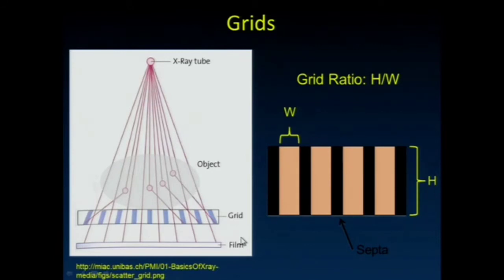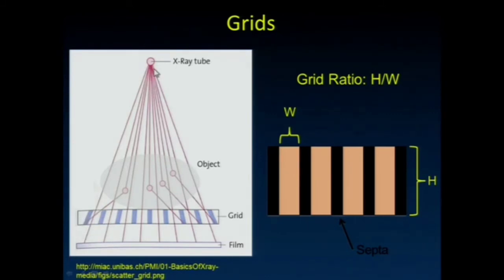Grids are another way to reduce scatter, and they're very similar to the collimator used in nuclear medicine. In nuclear medicine, the collimator focuses gamma-ray energy onto the camera. Here, we use the grid to reject scatter—the holes are lined up at a particular distance and angle to the x-ray tube.